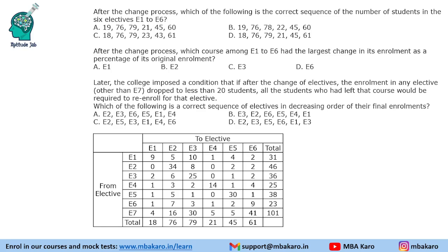Question: After the change process, what is the correct sequence of the number of students in the 6 electives E1 to E6? The correct sequence is: 18, 76, 79 — we can rule out some options — and then 21, 45, and 61.